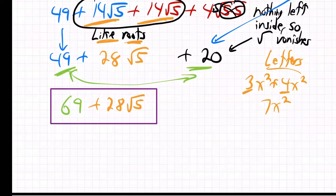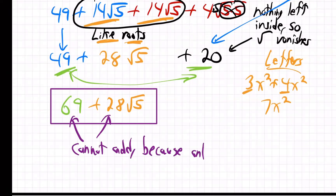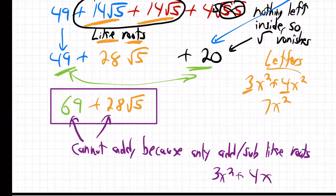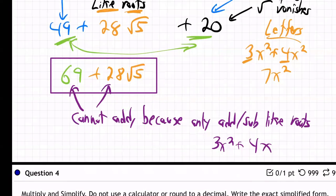Why don't we add those together? Because you can't. You cannot add. Why not? Because you only add or subtract like roots. Like we've talked about. Same thing for letters. Could I add three x squared and four plain x? No. Unlike. Cannot add.